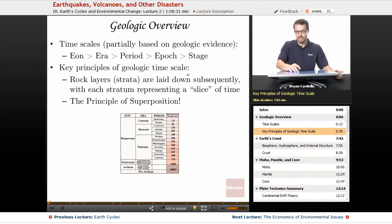So some key principles of the geologic time scale. Rock layers, strata, are laid down subsequently, with each stratum representing a slice of time. Now that makes sense. When you have movement within the crust and you get certain violent earthquakes, volcanic eruptions, etc., along with erosion over time,